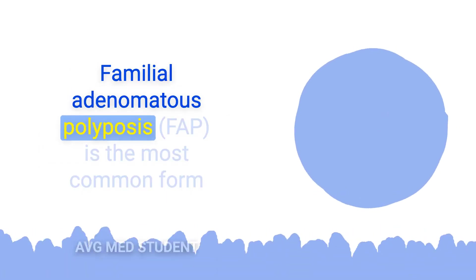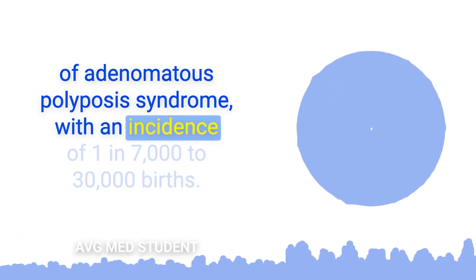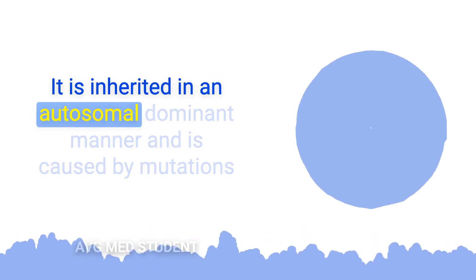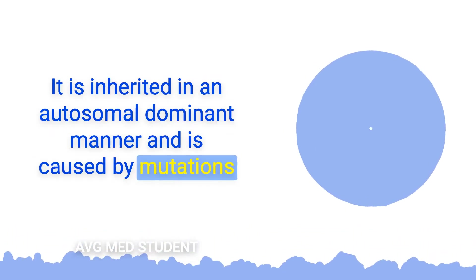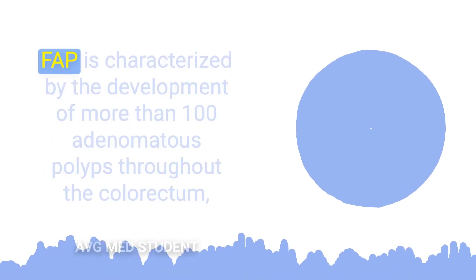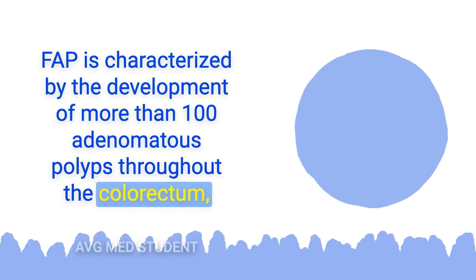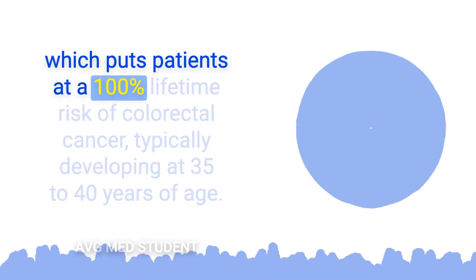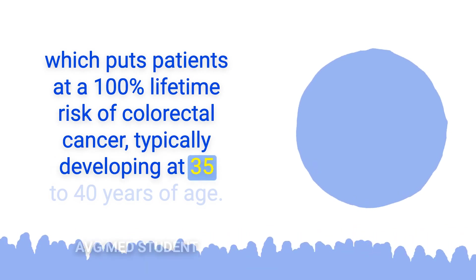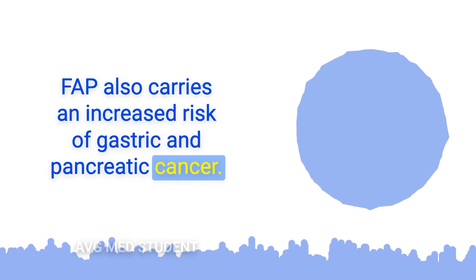Familial adenomatous polyposis is the most common form of adenomatous polyposis syndrome, with an incidence of 1 in 7,000 to 30,000 births. It is inherited in an autosomal dominant manner and is caused by mutations in the APC gene in 70 to 90% of patients. FAP is characterized by more than 100 adenomatous polyps throughout the colorectum, putting patients at a 100% lifetime risk of colorectal cancer, typically developing at 35 to 40 years of age. FAP also carries an increased risk of gastric and pancreatic cancer.